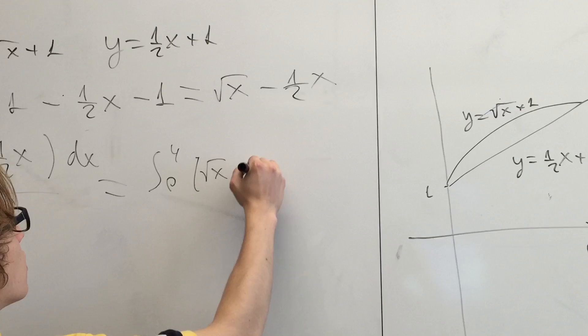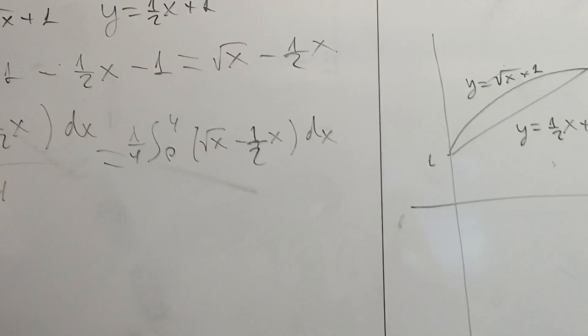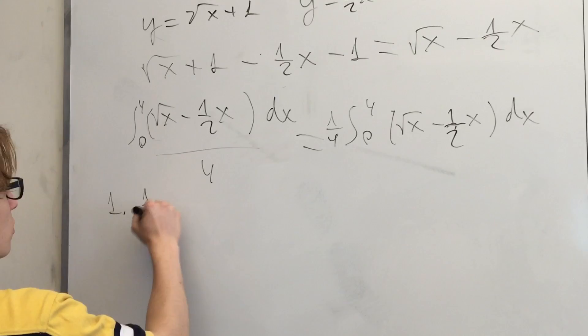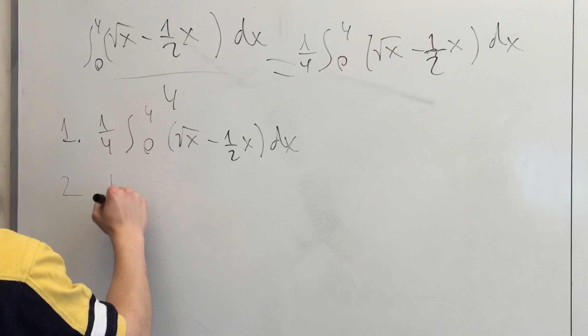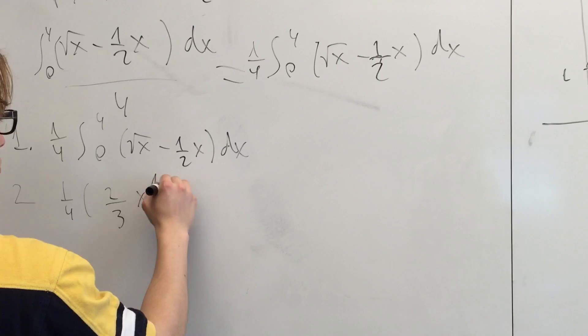So we can start solving. We have (1/4) times the integral from 0 to 4. Now we can just take the antiderivative of each individual term, and we'll get (2/3)x^1.5 - x²/4, evaluated from 0 to 4.